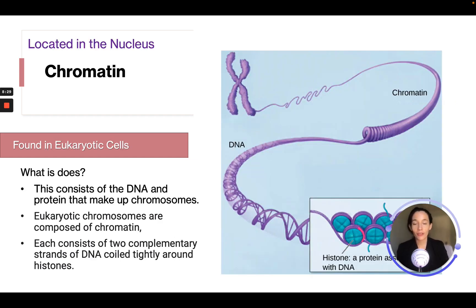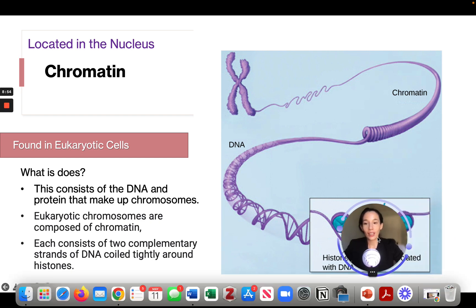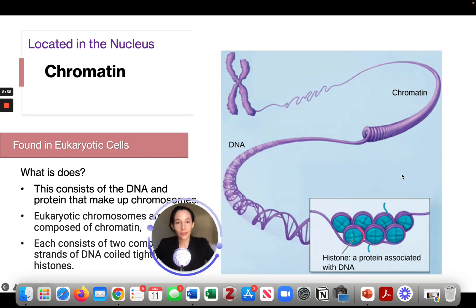Inside the nucleus of eukaryote cells is chromatin. It consists of DNA and protein that make up chromosomes. Each chromosome consists of two complementary strands of DNA tightly coiled around a histone. If we unwind the chromosome, it's made of chromatin; unwinding further reveals DNA; and at the bottom we see a histone — the protein associated with the DNA.